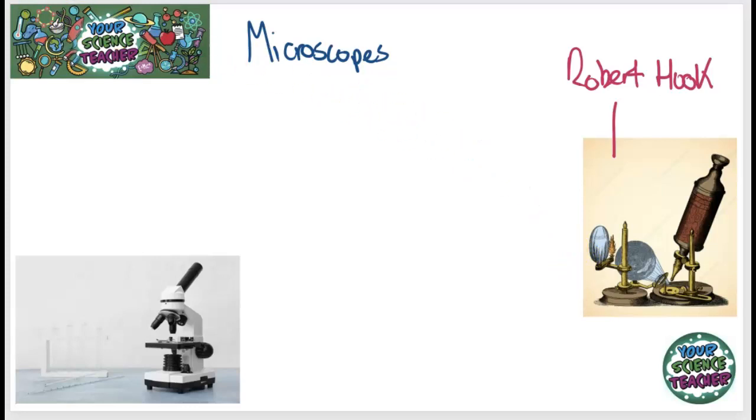Now, the microscopes that you have used in the labs, probably with your teacher, have looked a little bit different to the one that Robert Hooke used. That's because the one that Robert Hooke used was used a long, long time ago. His microscopes were used in the late 1600s. However, the microscope that you probably used in your laboratory at your school was a light microscope, which is shown just down here.